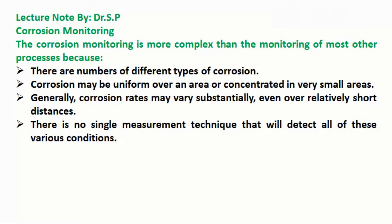Corrosion monitoring is more complex than the monitoring of most other processes because there are a number of different types of corrosion. Corrosion may be uniform over an area or concentrated in very small areas. Generally, corrosion rates may vary substantially, even over relatively short distances.